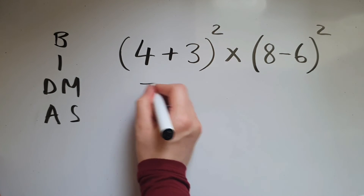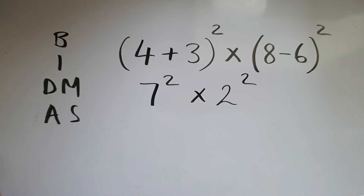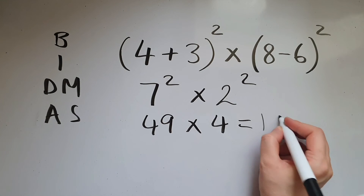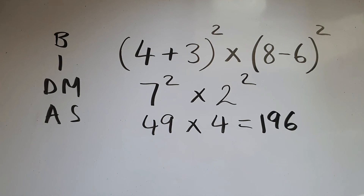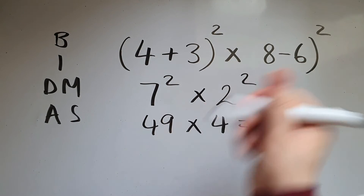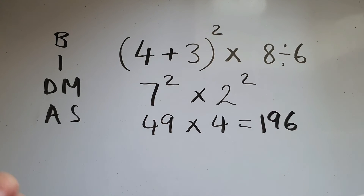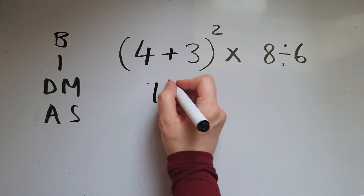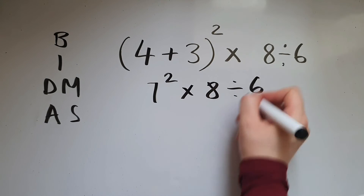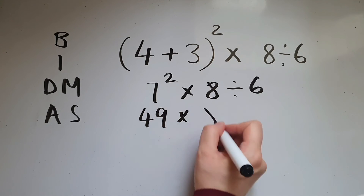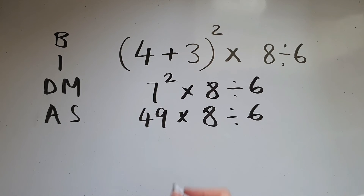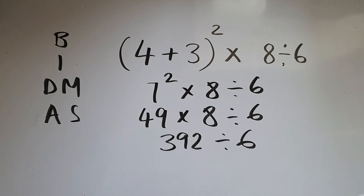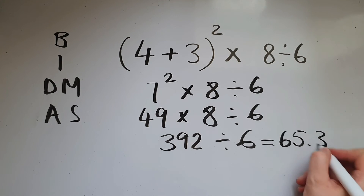Brackets first — that would be 7 squared times 2 squared. 7 squared is 49, times 2 squared which is 4, that is 196. What if we had this instead? We'll do brackets first, so that is 7, and that's squared, times 8 divided by 6. 7 squared is 49, 49 times 8 is 392, now divided by 6, that gives us 65.3 recurring.